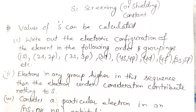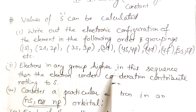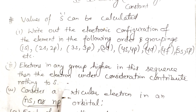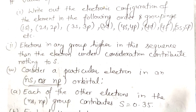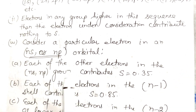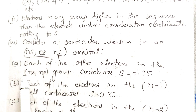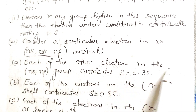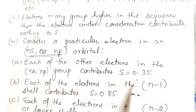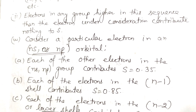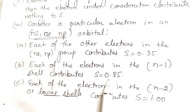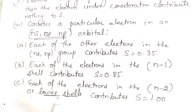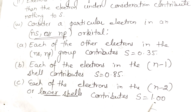The second step: electrons in any group higher in this sequence than the electron under consideration contribute nothing to S. The third point: for a particular electron in an NS or NP orbital, each of the other electrons in the same NS/NP group contributes S = 0.35, each electron in the N-1 shell contributes S = 0.85, and each electron in the N-2 or lower shells contributes S = 1.